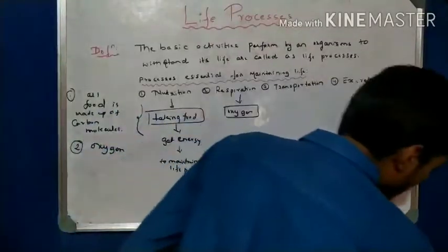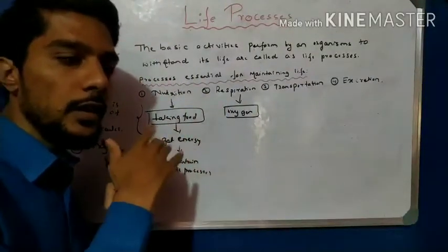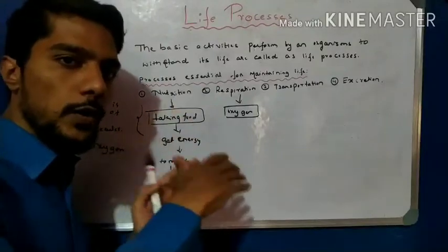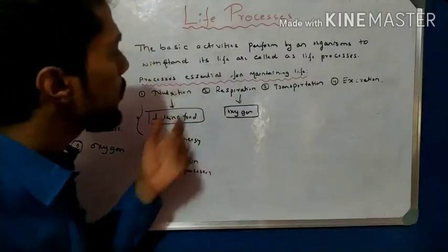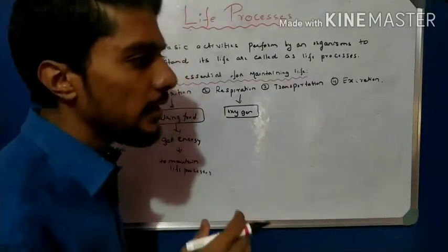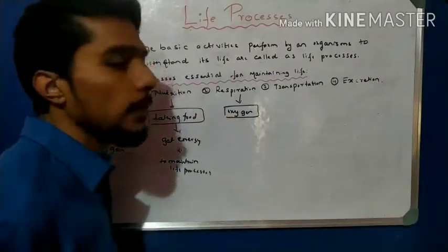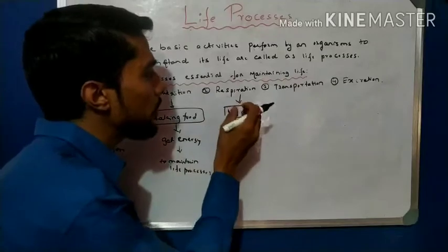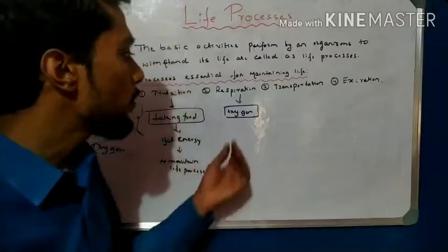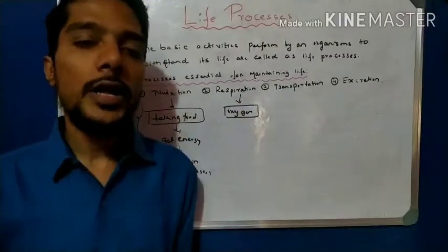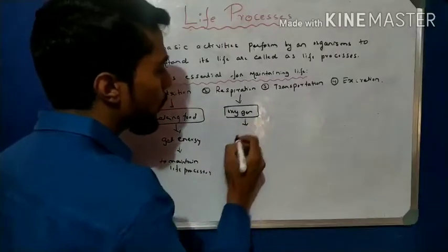Now come to respiration. Oxygen is the second raw material needed for life processes, and it is taken by the process called respiration. Through respiration, oxygen is taken into the body, transferred, and used to break down food. Oxygen is very important for the process of oxidation of food. When we take food, during respiration, the food is broken down into glucose, and that glucose is converted into energy in the presence of oxygen.